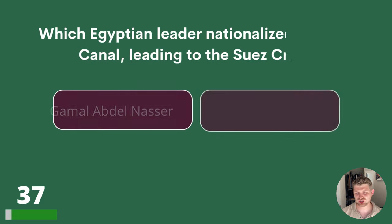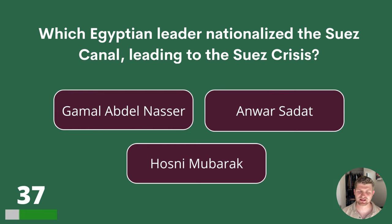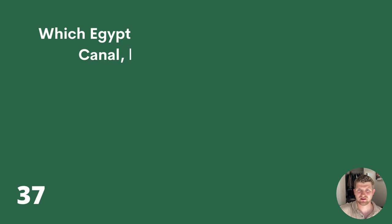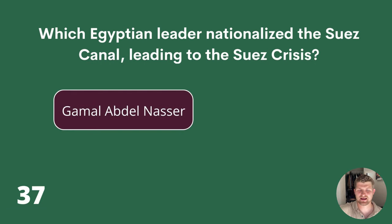Question 37. Which Egyptian leader nationalised the Suez Canal, leading to the Suez Crisis? Gamal Abdel Nasser, Anwar Sadat or Hosni Mubarak? The answer is Gamal Abdel Nasser.